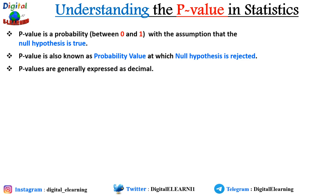P-values are generally expressed as decimals, although it may be easier if you convert them into percentage. The smaller the p-value, the stronger the evidence that you should reject the null hypothesis. Usually a p-value of 0.05 is used. If you convert this into percentage it comes to five percent, which means there is a five percent chance that your result could be random — that is, it would have happened by chance.